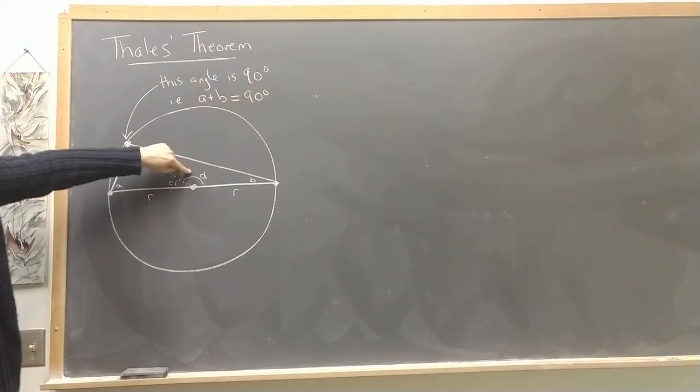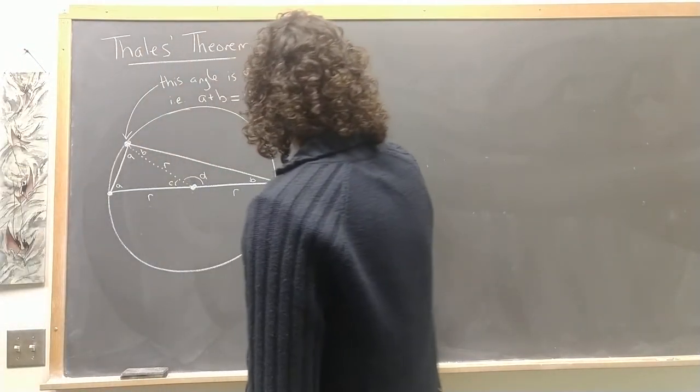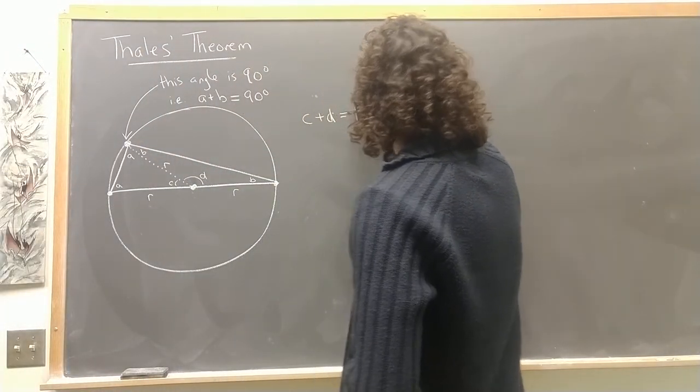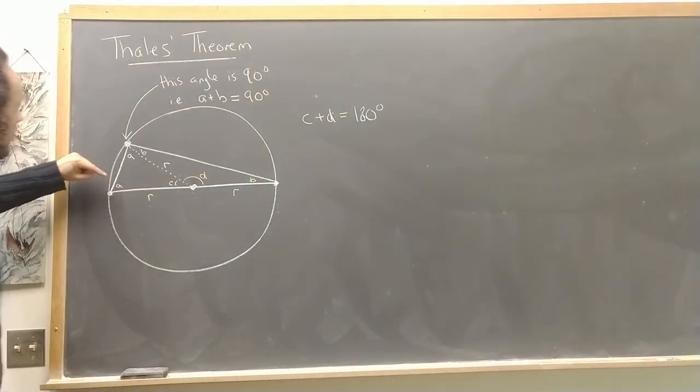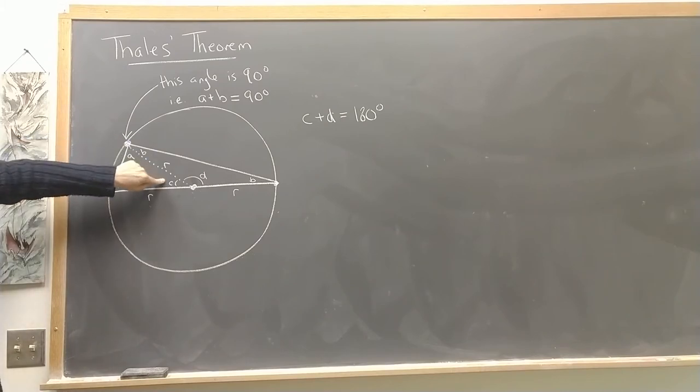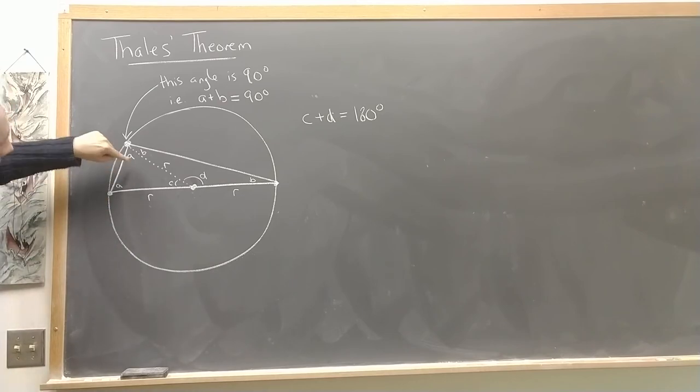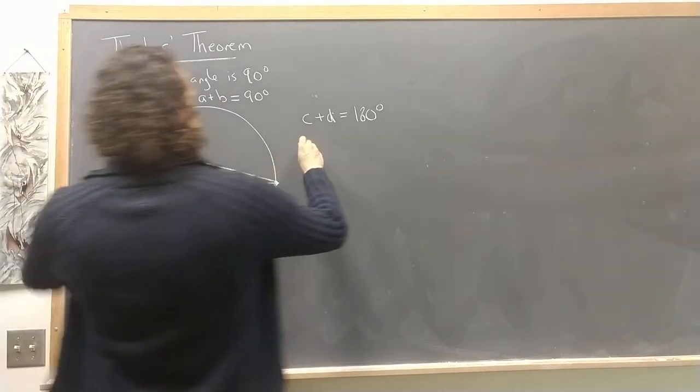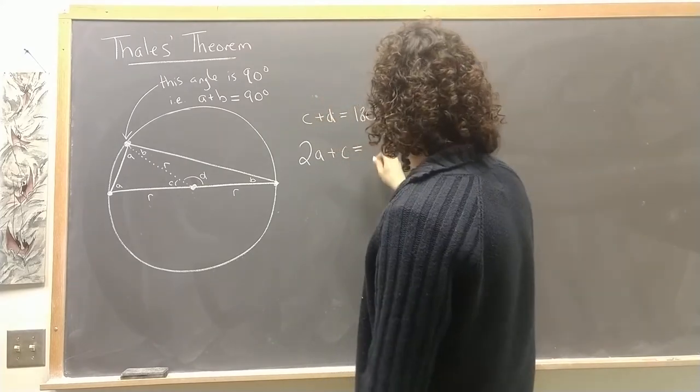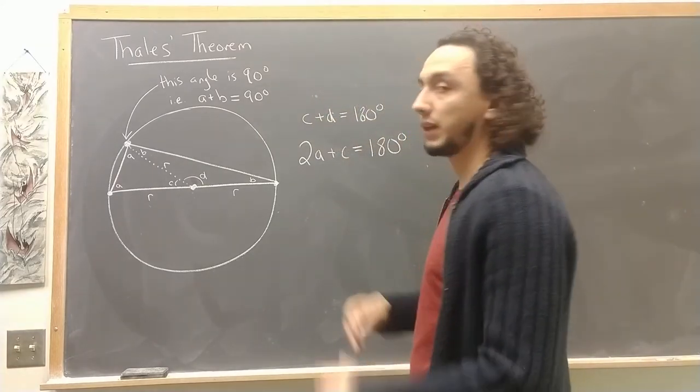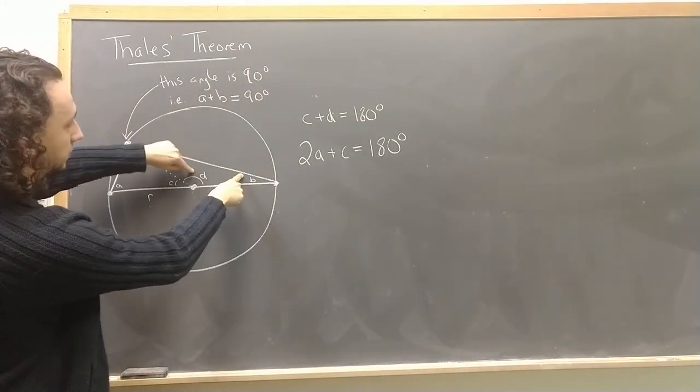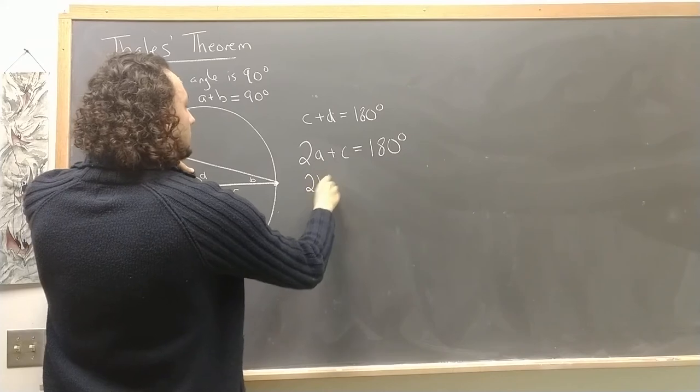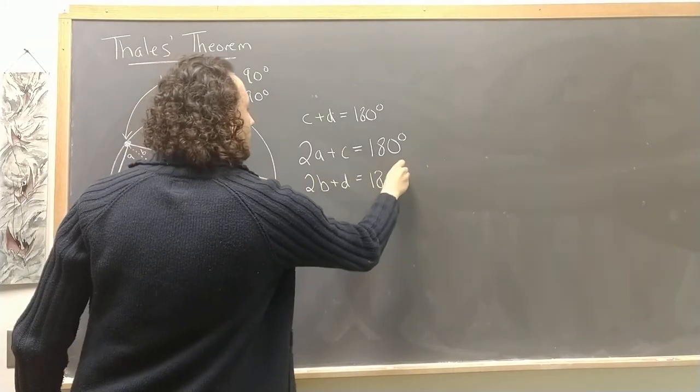Another easy thing to see is that C plus D equals 180 degrees, since together they make a flat line. And what else do we have? Well, we know that the sum of the interior angles of a triangle adds up to 180 degrees. So that means that A plus A plus C, so 2A plus C, is equal to 180 degrees as well. I have a whole other video that shows this result. And similarly, B plus B plus D, so 2B plus D is equal to 180 degrees.